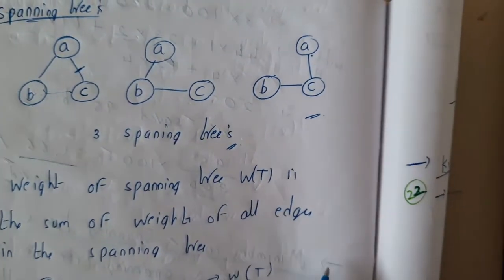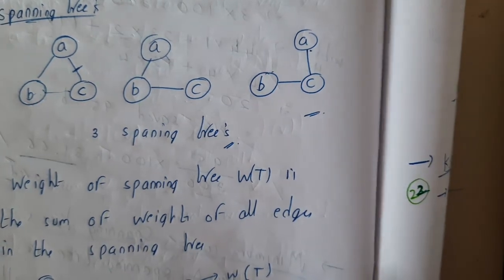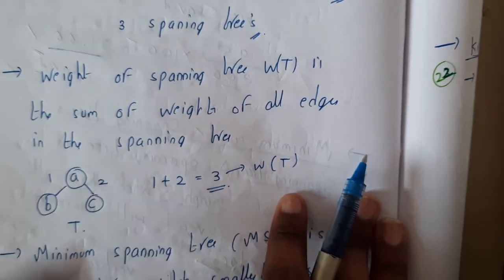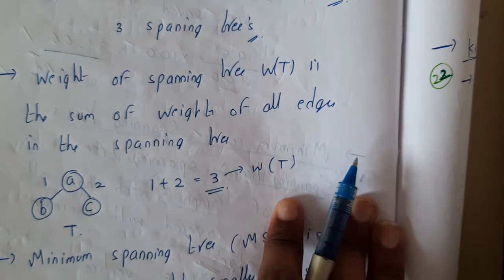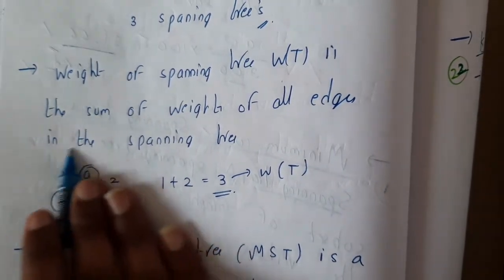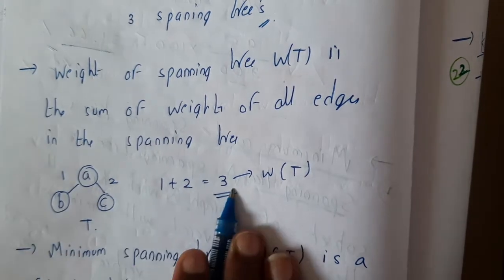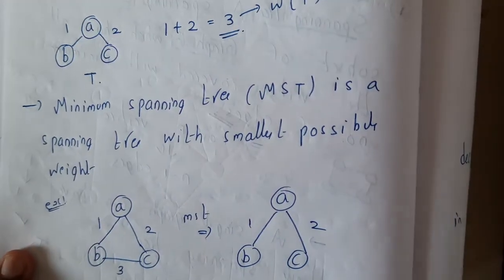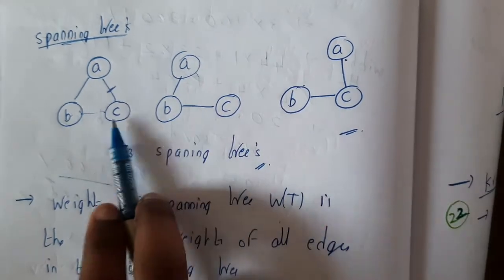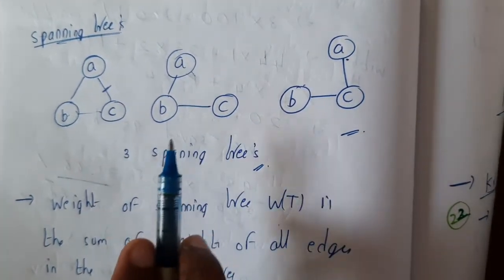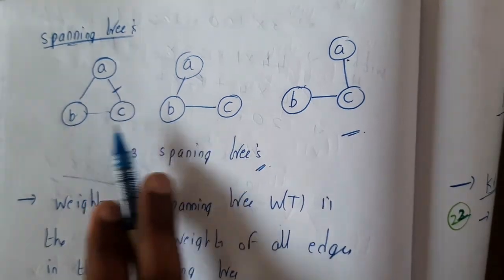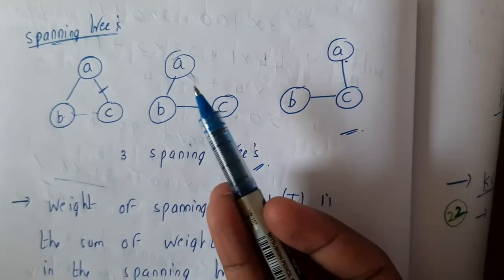When edges between vertices are given particular weights, we can compute the weight of the spanning tree. The weight of a spanning tree is the sum of weights of all its edges — for example, one plus two equals three. A minimum cost spanning tree is the one with the least total weight among all possible spanning trees of the graph. Not all spanning trees will have equal cost, so we select the one with the minimum.